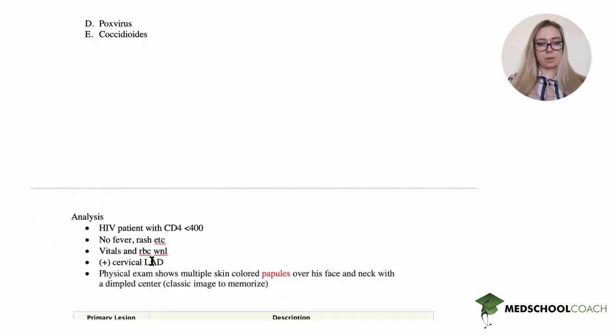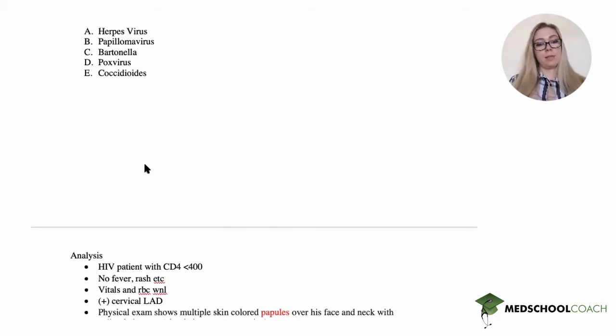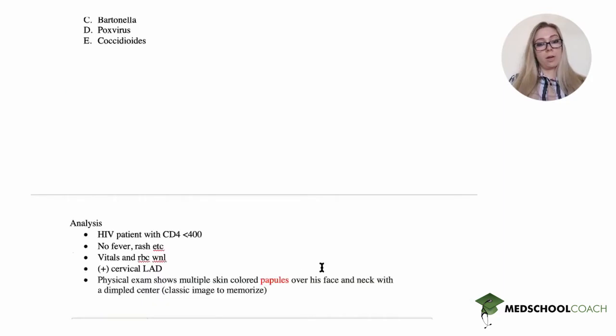Now let's analyze this patient. This is an HIV patient with a CD4 count of less than 400, about 300. He doesn't have fever, rash, or systemic symptoms. Vitals and red blood cells are within normal limits. He does have cervical lymphadenopathy.